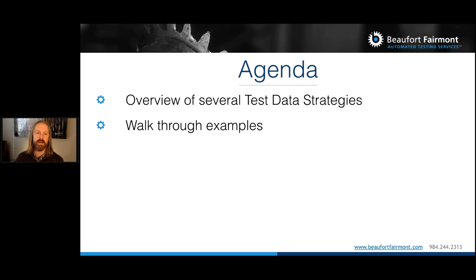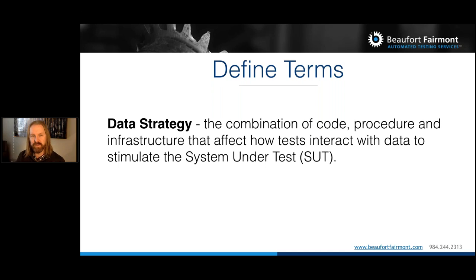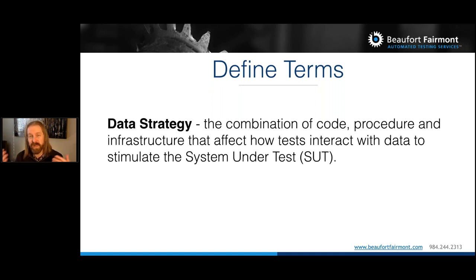The agenda today is an overview of several strategies and then we'll walk through some examples. The reason I started studying this is I realized that the main reasons tests don't work when run repeatedly or in parallel is because of something outside of the test itself — generally something persisted outside of the application, like a database, a file system, or third-party APIs. When two tests try to use the same piece of data and one modifies it, there's a race condition.